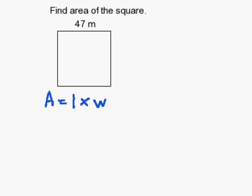Now for a square, it's a little nice because the length and width are the same. So it's just 47 times 47. Let's go ahead and multiply that now.